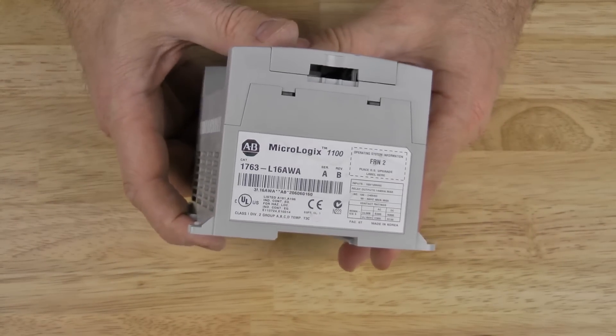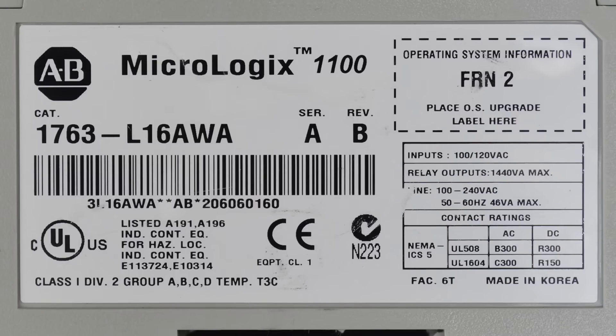On the right we have the product label. Let's zoom in on that. Here you can see the catalog number is 1763-L16AWA. You can also see the series, revision, FRN, as well as information about the inputs, outputs, line power, and certifications like UL and CE.